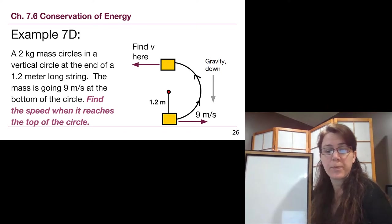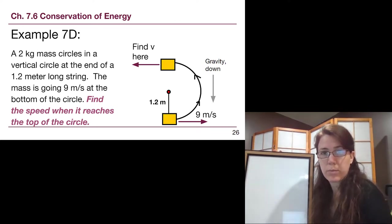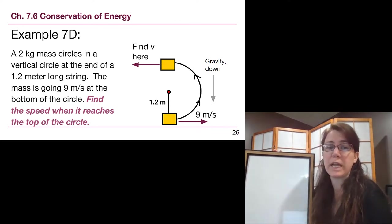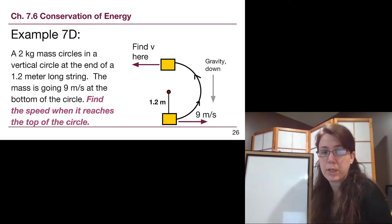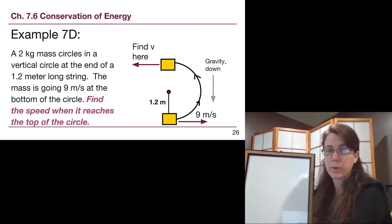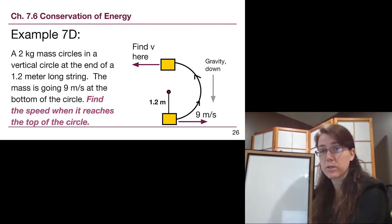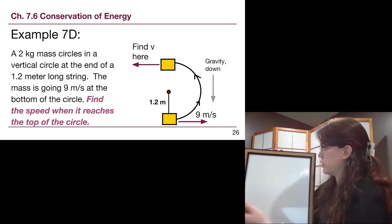So for this example, we have that the 2 kilogram mass is going around at the end of a 1.2 meter long string. Now that 1.2 meter long string, if we look at the picture, is the radius of the circle from back in Chapter 6. But when we try to think about the picture that we're going to draw, what we'll recognize is that that's telling us something about the difference in height, but the difference will not just be the 1.2. But let's not get ahead of ourselves, let's start drawing the situation.